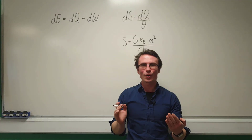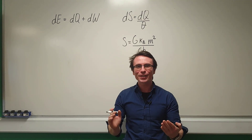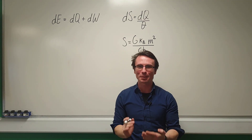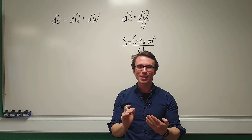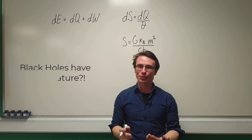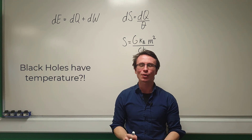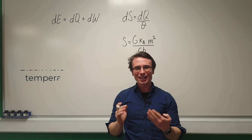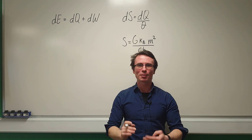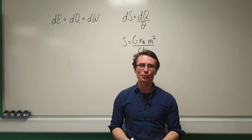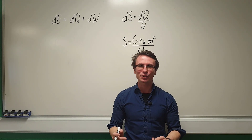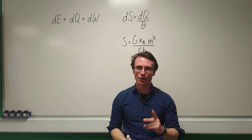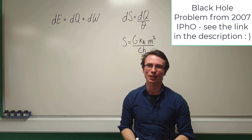Stephen Hawking was the first scientist to argue that black holes emit radiation, now known as Hawking radiation, at a given temperature. Let's use a problem from the International Physics Olympiad to actually find the Hawking temperature of a black hole.